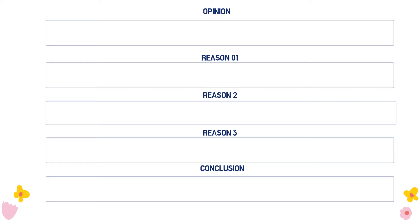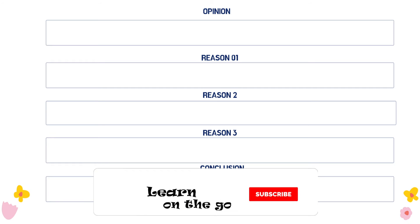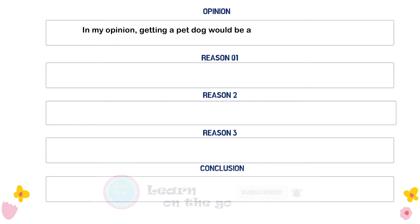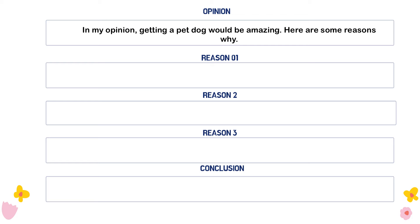Here's the structure. To begin, we state our opinion. We start with: 'In my opinion, getting a pet dog would be amazing. Here are some reasons why.' With the opinion, we give a brief introduction to our persuasive text.